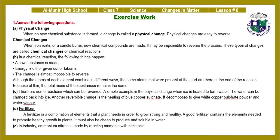Another reversible change is the heating of blue copper sulfate — it decomposes to give white copper sulfate powder and water vapor. Part D — Fertilizer: a fertilizer is a combination of elements that a plant needs in order to grow strong and healthy. A good fertilizer contains the elements needed to promote healthy growth; it must also be cheap to produce and soluble in water. Part E — In industry, ammonium nitrate is made by reacting ammonia with nitric acid.